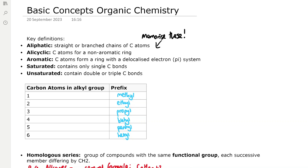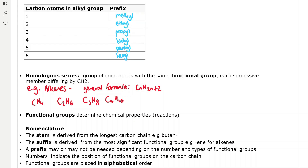Saturated compounds contain only single carbon bonds — they don't contain any double or triple bonds — whereas unsaturated compounds, such as alkenes and alkynes, contain double or triple carbon bonds.